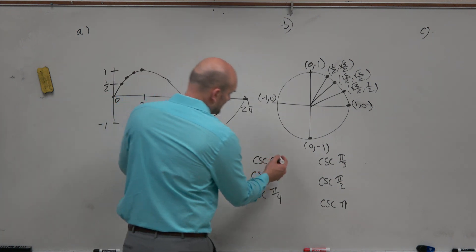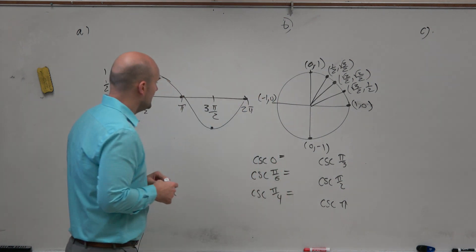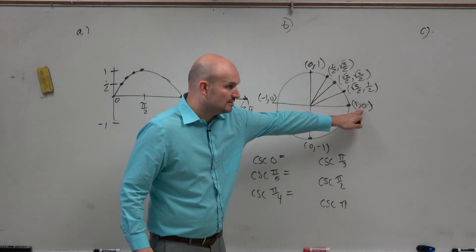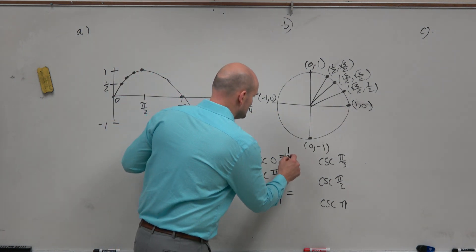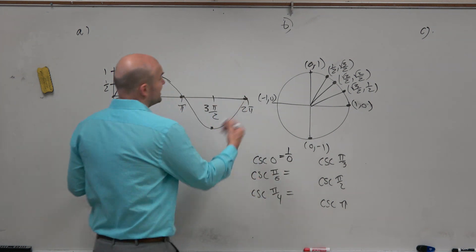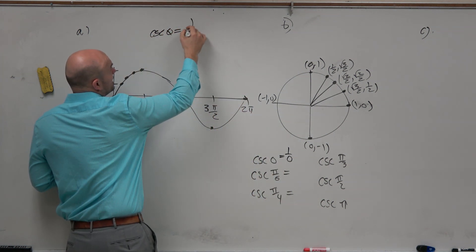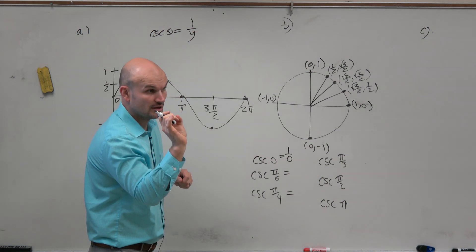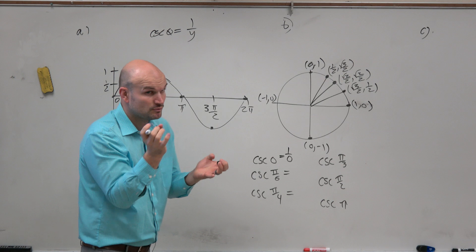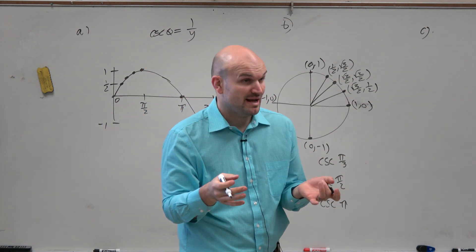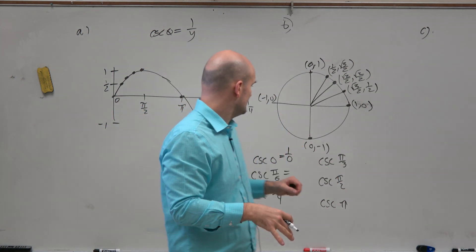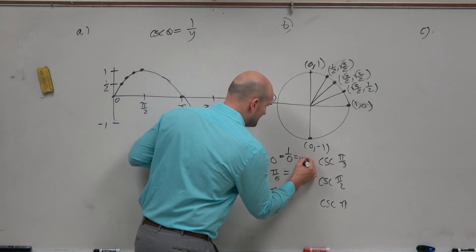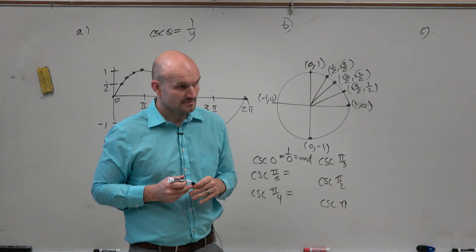So cosecant of 0 is obviously the y-coordinate, which is 0. But 1 over 0, which is the reciprocal. Cosecant of theta is 1 over y. That's for a point on the unit circle, though. Many of you made that mistake on your quiz. So it's just 1 over 0. Well, obviously, 1 over 0 is undefined.